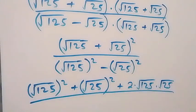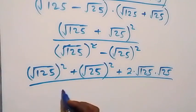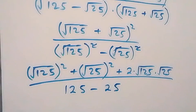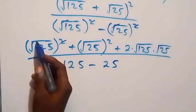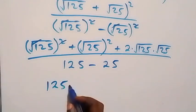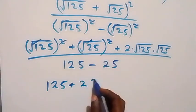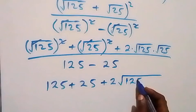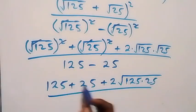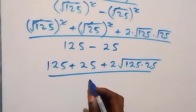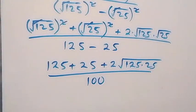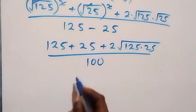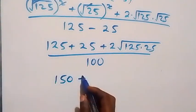Divided by the denominator — here the square cancels the square root, giving us 125, then minus — same thing here — we have minus 25. In the numerator, square cancels square root giving us 125, plus also here square cancels square root giving us plus 25, then plus 2 multiplied by root of 125 times 25. In the denominator, subtracting gives us 100. Don't forget to like and click the subscription button.